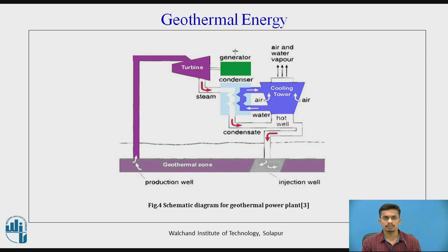At a geothermal power plant, the fuel is geothermal water heated naturally inside the earth, so we don't require burning of any fuel. With the help of hot steam available in the crust of the earth, turbines are rotated which are connected to generators to produce electricity. The condensed steam or water is again injected into the crust with the help of an injection well, as shown in the figure.